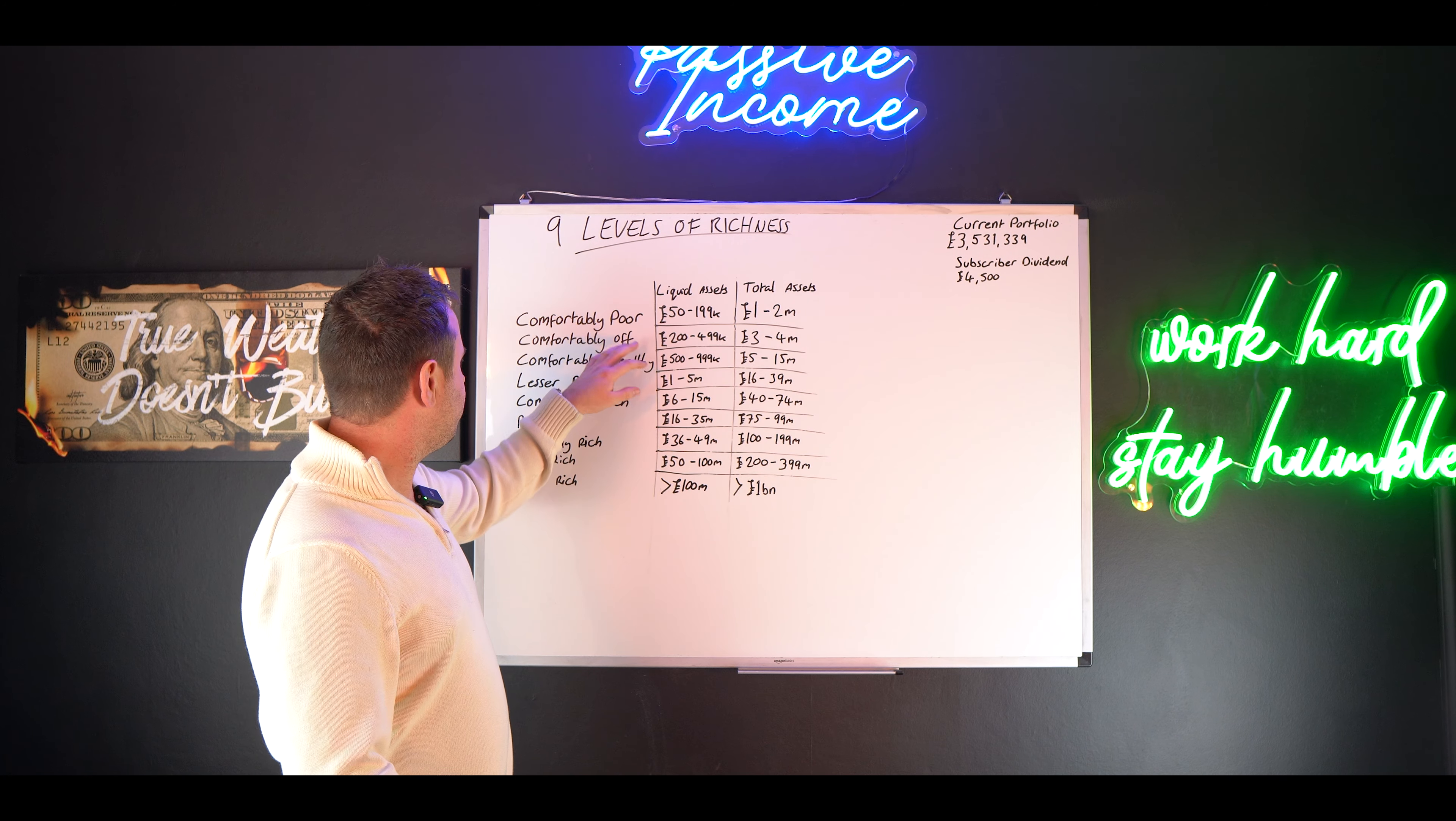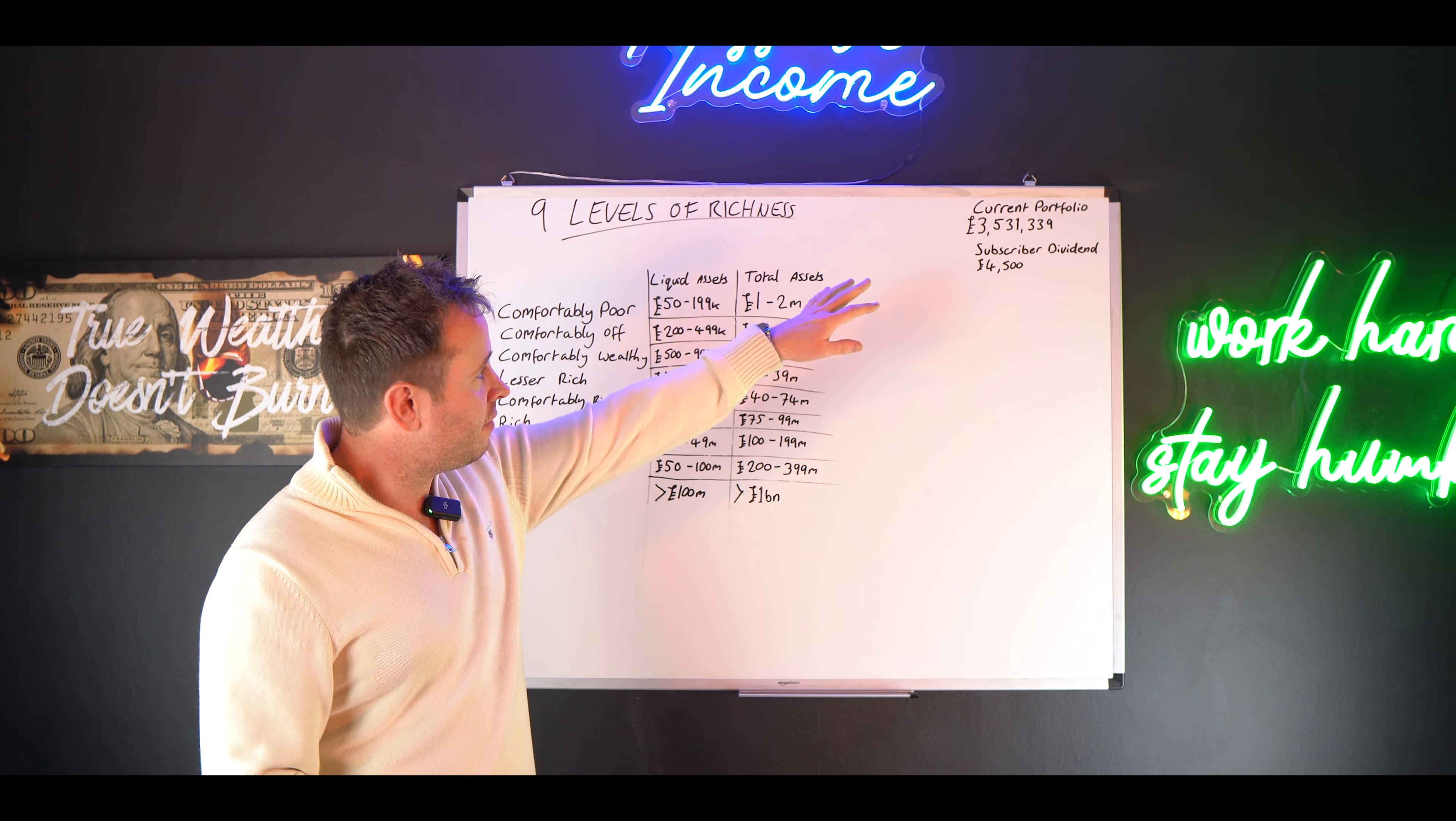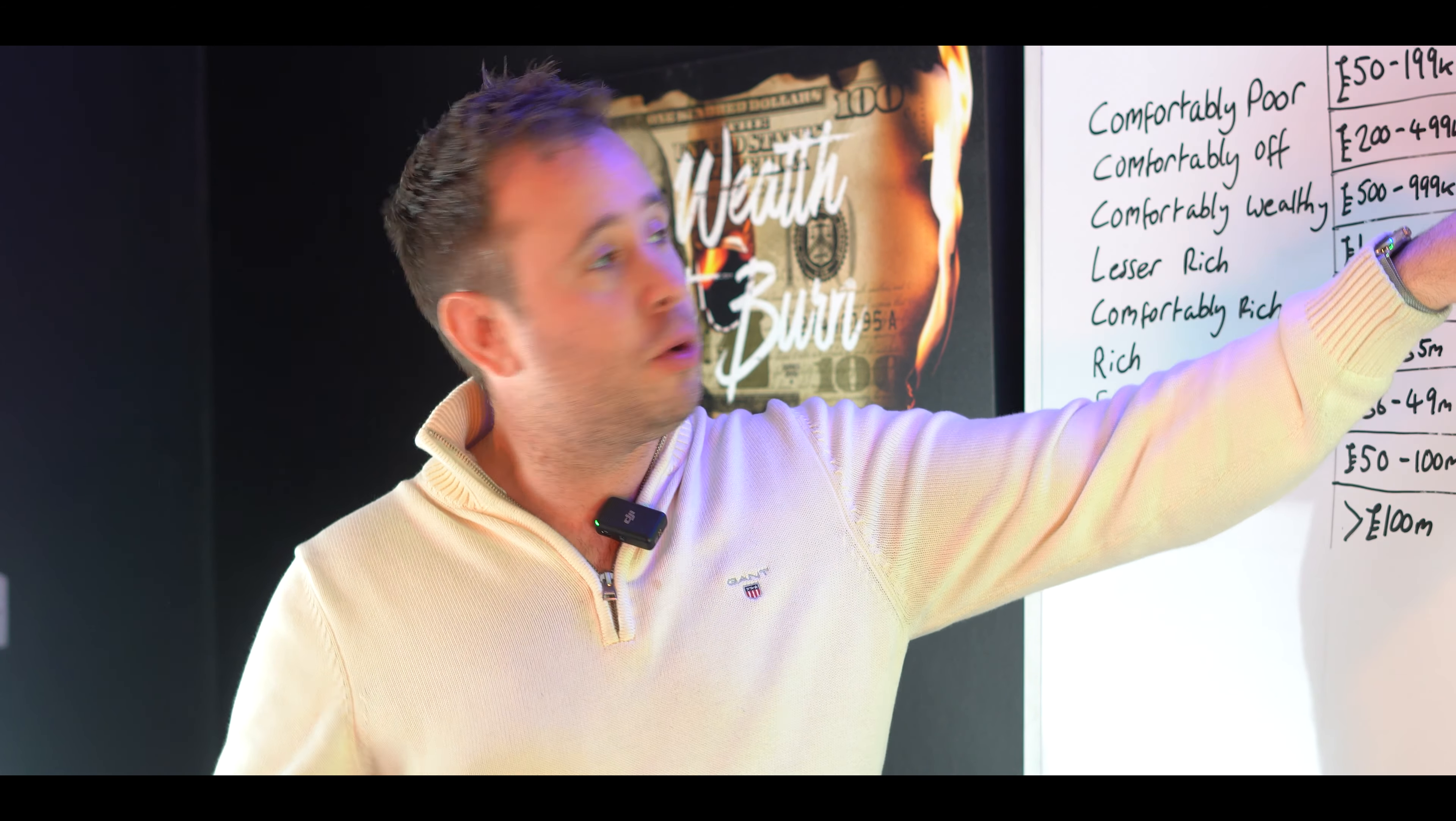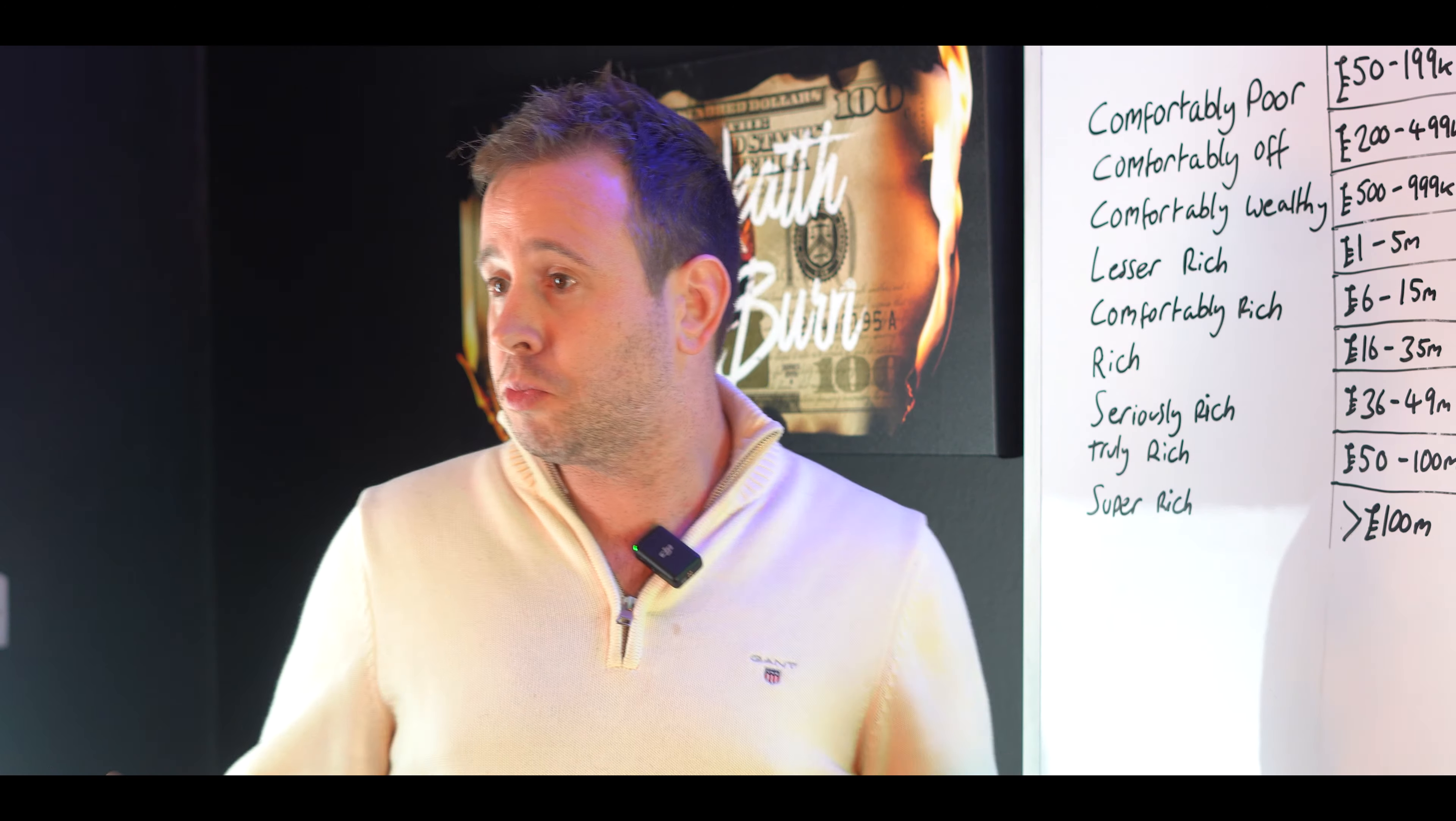So for myself, I would probably put myself as comfortably off. I've got between 200 and 500k of liquid stuff that tomorrow I could sell. Obviously my net assets are higher because I've got property. I've got three and a half million pounds worth of property, but I have got 1.7 million pounds worth of debt, so that nets down to about 1.8 million in property assets. But I've also got private businesses that I own that bump my net worth up significantly. But because my liquid assets are probably only somewhere in this bracket, I would put myself as comfortably off.